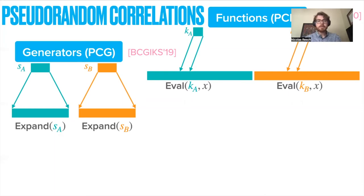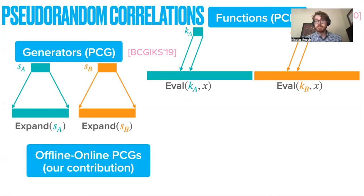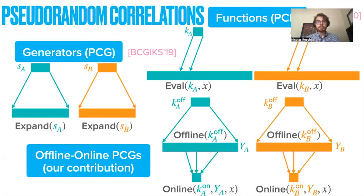Notice that the pseudo-random correlation generators, all the work is done in the offline phase, whereas in pseudo-random correlation functions, pretty much all the work is done in the online phase when they have to actually obtain the pre-shared randomnesses. In this work, we suggest a more equitable distribution of the work between the offline and online phase, constructing what we term offline-online PCGs.